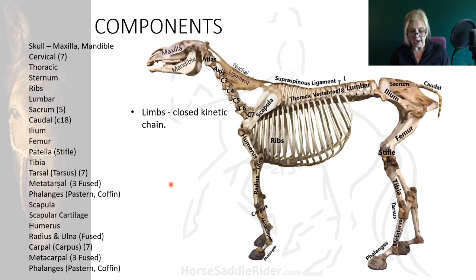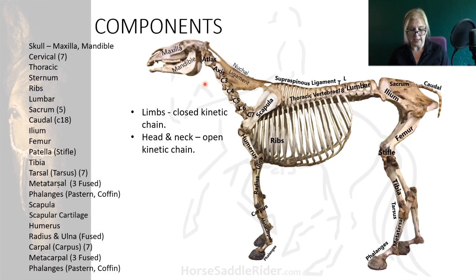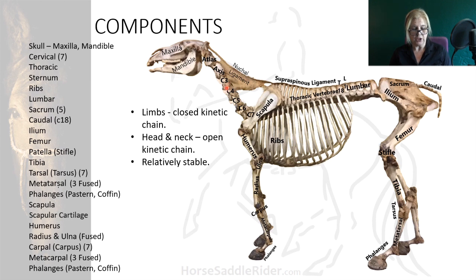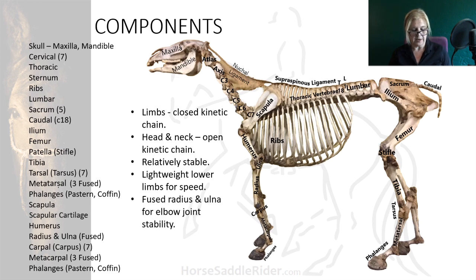With all limbs contacting the ground this structure is a closed kinetic chain. In contrast, the head and neck is open kinetic chain — it does not touch the ground — support of which is aided by the nuchal ligament together with a deep cervicothoracic joint to inhibit excess movement at the base. It's relatively stable with a leg in each corner, except for the overhang of a weighty head and neck, although this is used for balance. The lower limbs are comparatively lightweight for speed and the radius and ulna are fused for elbow joint stability at speed.